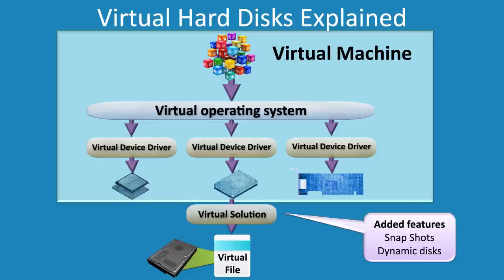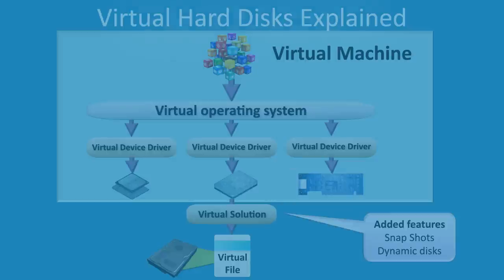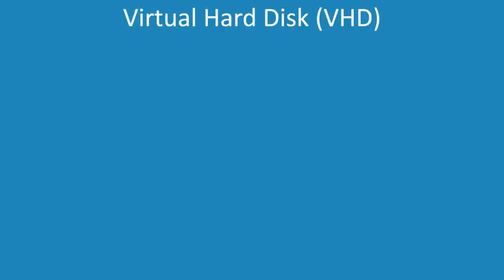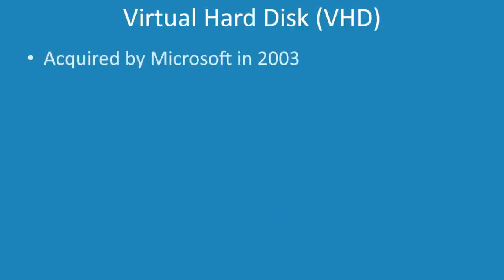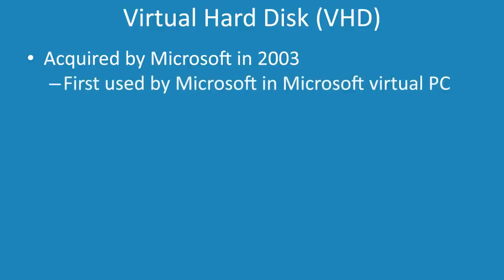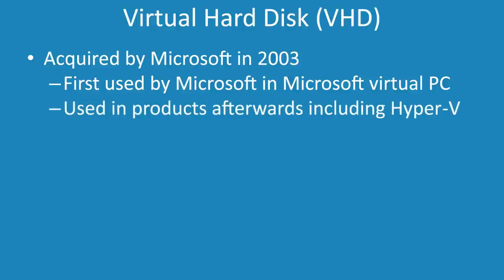Now let's have a closer look at the VHD file format. The virtual hard disk format or VHD was first acquired by Microsoft in 2003 by way of acquiring the company that developed it. The technology was first used in Microsoft Virtual PC and has continued to be used in products like Hyper-V.